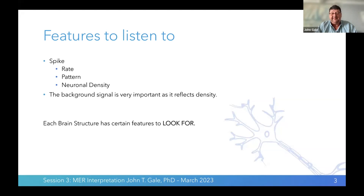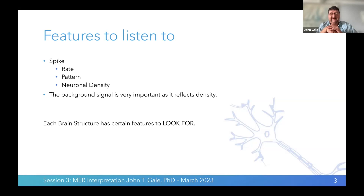In addition to the spiking pattern, you can often hear changes with movement or behavior in the background pattern. That background consists of glial cells, anything around the neurons, but also neurons that are very distant — you can't distinguish them separately, but you can still hear them modulate with behavior. The background is often very important for isolation. In terms of local field potentials, the background can be very significant because it has many more neurons making up this background noise.